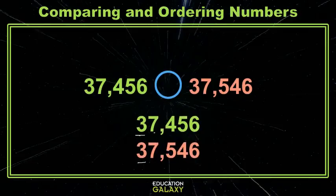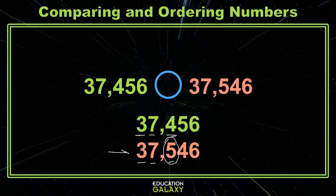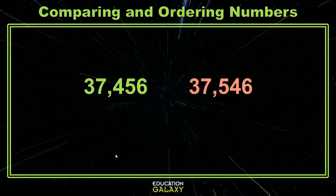They're equal, so we just move to the next place value, which is the thousands. They're equal, so we just move to the next place value, which is the hundreds. Not equal — the 5 is greater than the 4. So this number is larger than the other number, and we can put our symbol in like this.